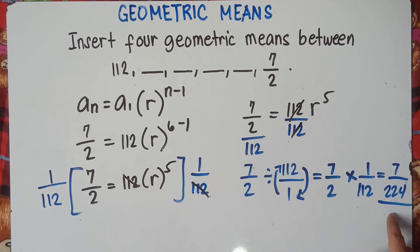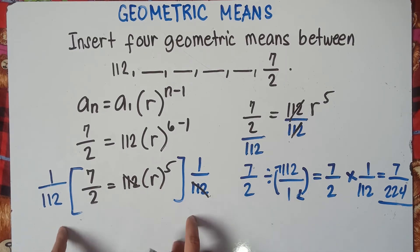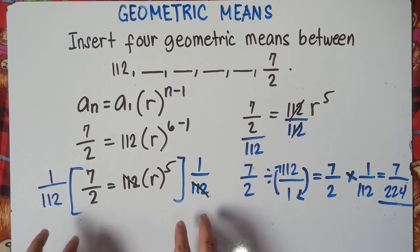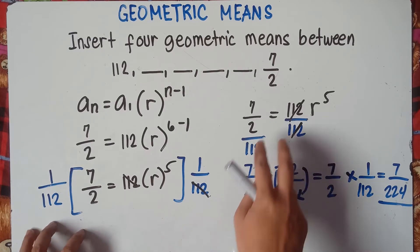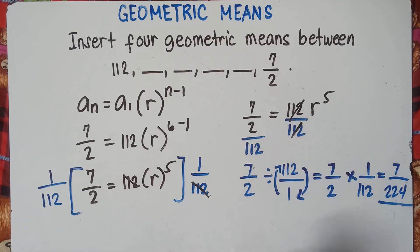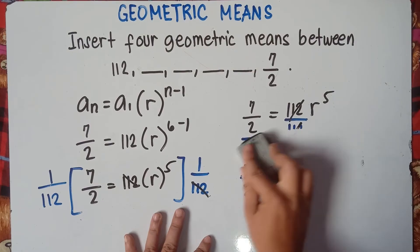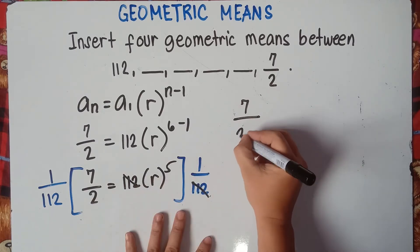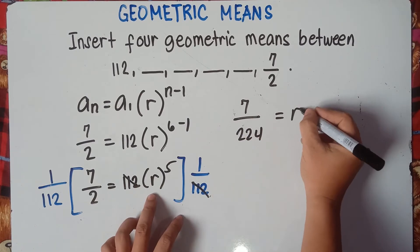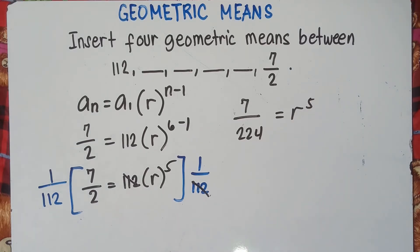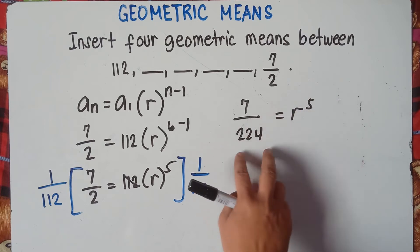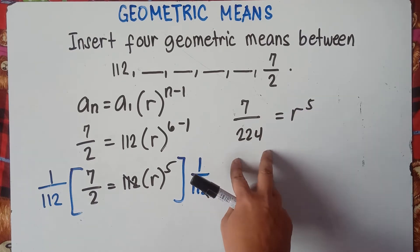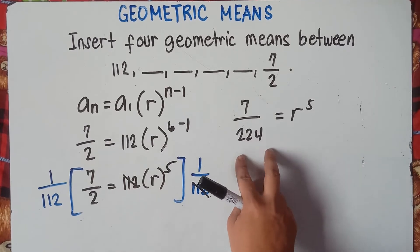It depends on you — which solution do you prefer? The answer is 7 over 224 equals r raised to the power of 5. Now, before we extract the fifth root of both sides, check first if we can reduce this fraction. Can we reduce 7 over 224?